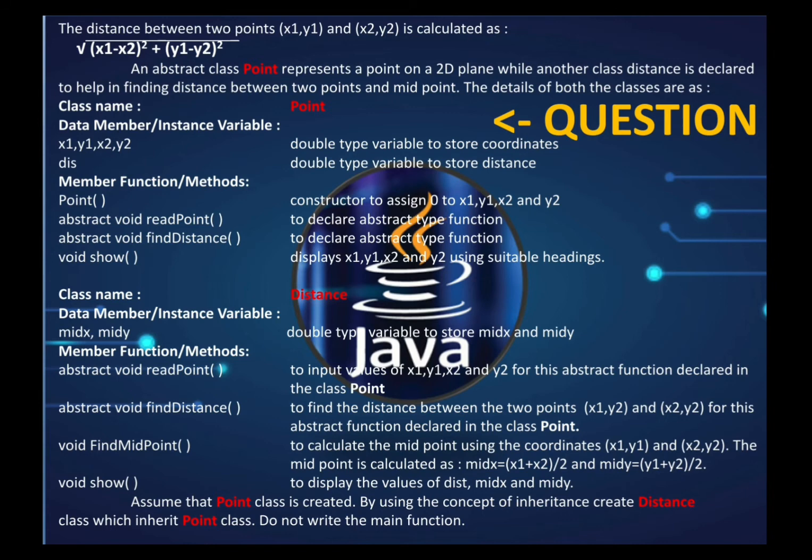Then there is void show() in Point class, which displays x1, y1, x2, y2 with suitable headings — showing Point 1 and Point 2 with their two coordinates.